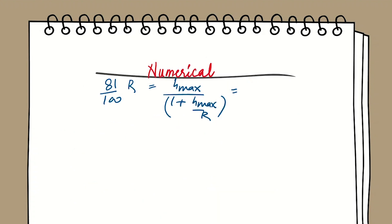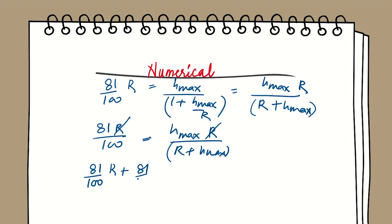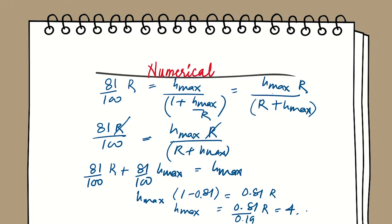After cancelling, we get (81/100)·r = h_max·r / (r + h_max), which gives 81r(r + h_max) = 100·r·h_max. Expanding: 81r + 81·h_max = 100·h_max. So 81r = 19·h_max, giving h_max = 81r/19 ≈ 4.26R. The maximum height attained is approximately 4.26 times the Earth's radius.